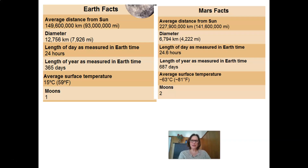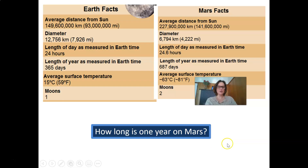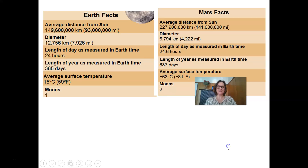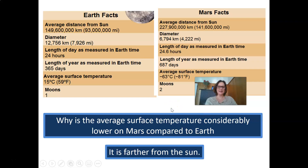A couple of questions for you: how long is one year on Mars? Correct — 687 days. Why is the average surface temperature considerably lower on Mars compared to Earth? Look at the distance from the Sun on the fact sheet — that's exactly it. Mars is further from the Sun, so it is colder.